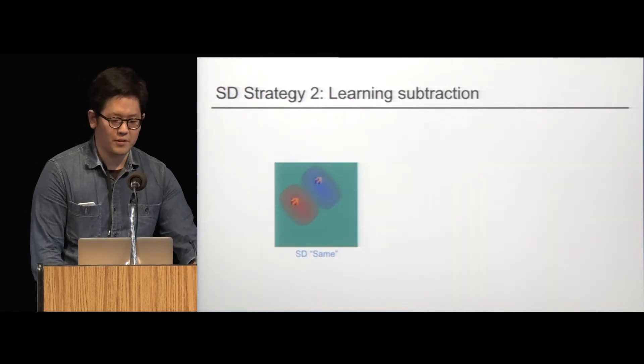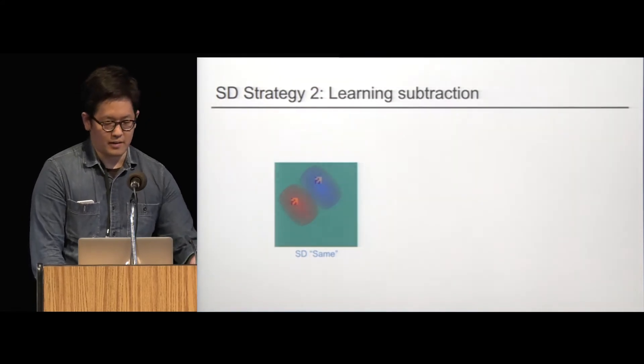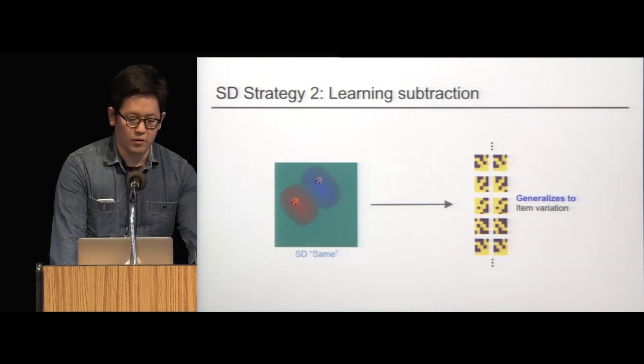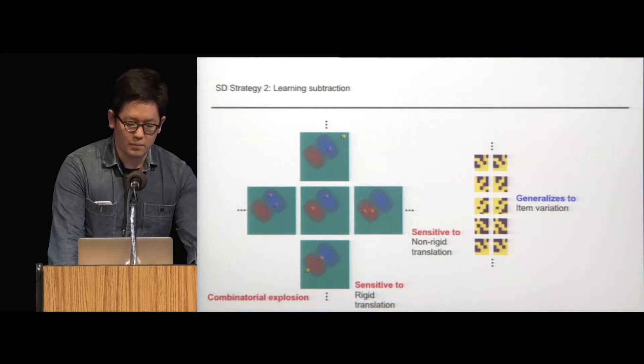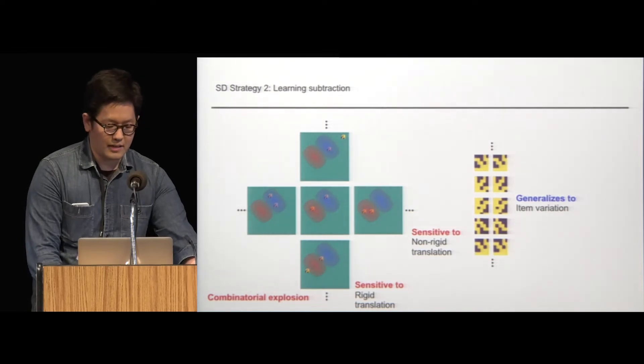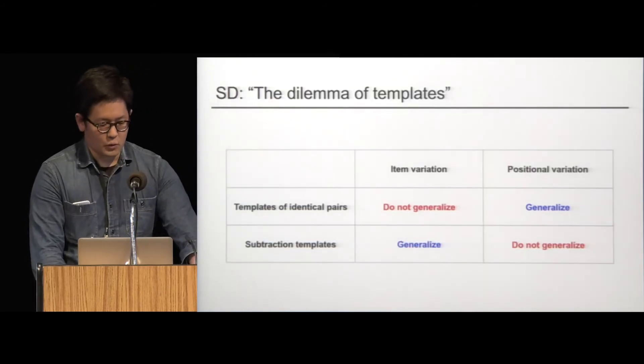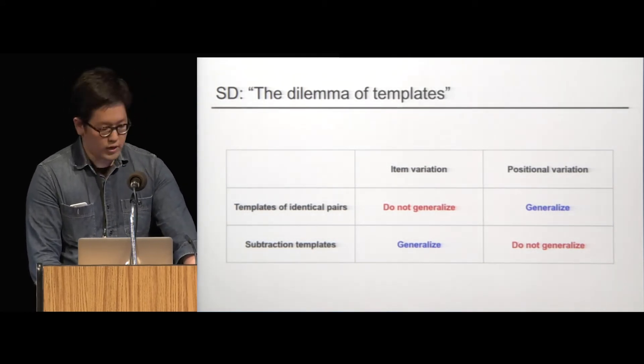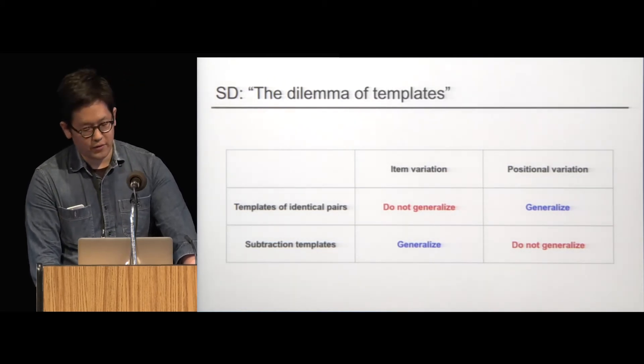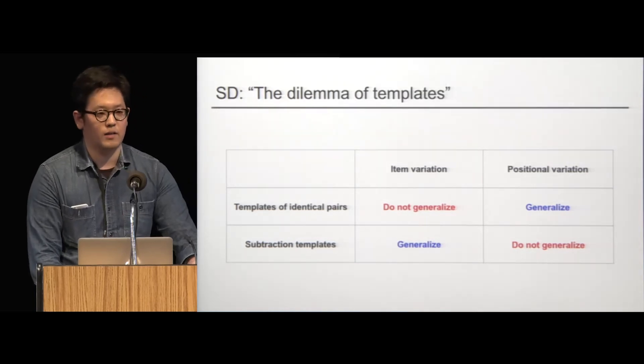So, maybe a different strategy. So, how about having a subtraction template between the two, right? Similar to Gabor filters, you can have a positive and negative sub-regions in the weights so that the template can perform subtraction between the two regions in the image. Nothing new. At least, we know that this strategy ensures that the templates do generalize to item-level variation. But then, the problem is that the subtraction templates don't generalize to positional variation. These templates, by definition, are unable to discriminate between bit patterns and the background. And this makes each template susceptible to producing spurious same-difference signal as a result of possible positional misalignment. So, in this sense, same-difference poses a kind of a dilemma to a CNN. In one strategy, the templates do generalize to positional variation but not to item variation. In another strategy, the templates generalize to item variation but fail to generalize to positional variation. In this sense, we think same-difference, there is no sample-efficient strategy in CNN for solving same-difference.